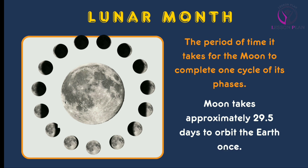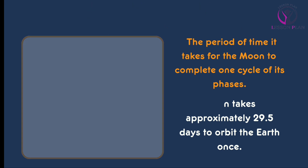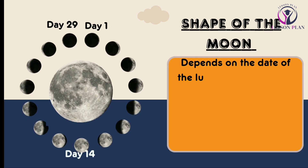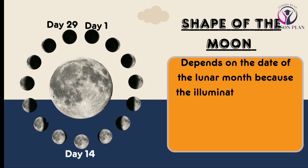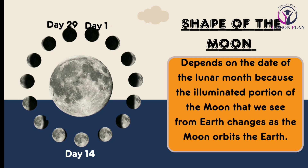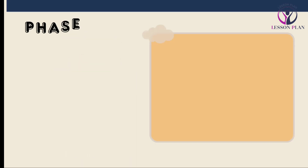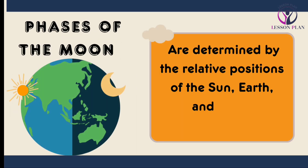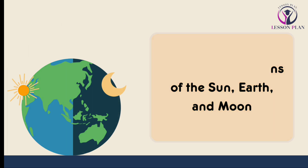A lunar month is the period of time it takes for the moon to complete one cycle of its phases, from new moon to new moon. The length of a lunar month is approximately 29.5 days, which is the time it takes for the moon to orbit the earth once. The shape of the moon depends on the date of the lunar month, because the illuminated portion of the moon that we see from earth changes as the moon orbits. The phases of the moon are determined by the relative positions of the sun, earth, and moon.